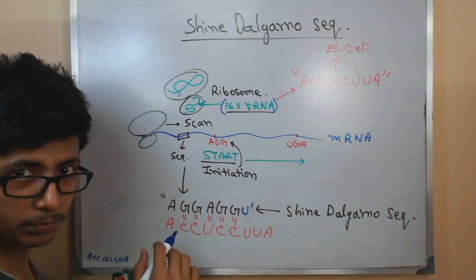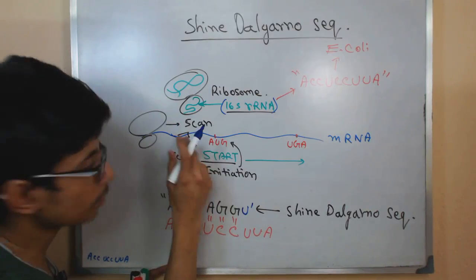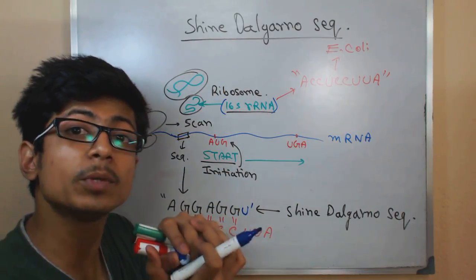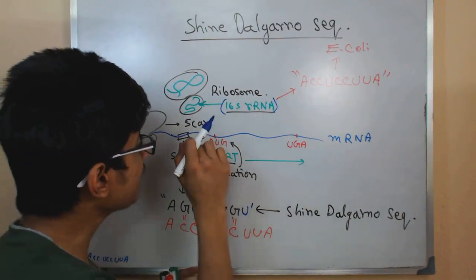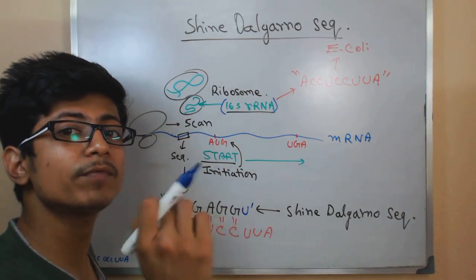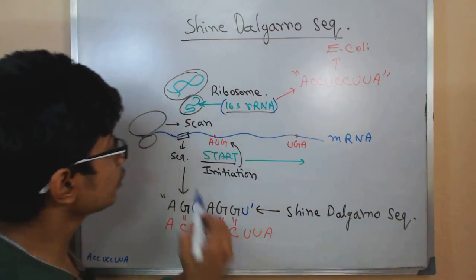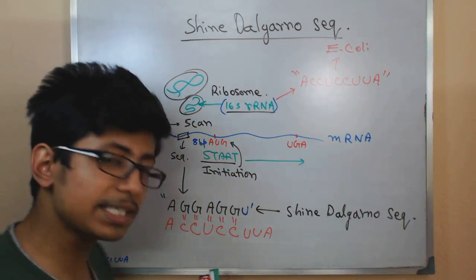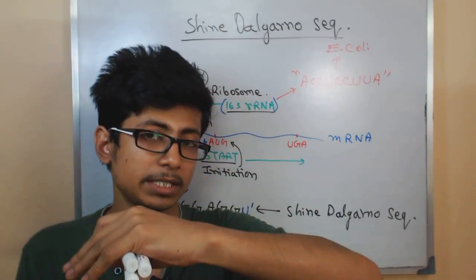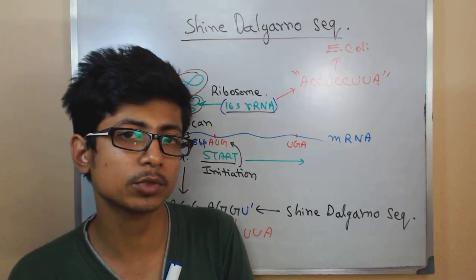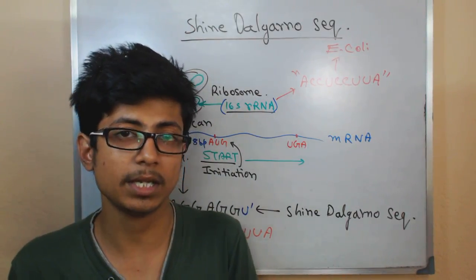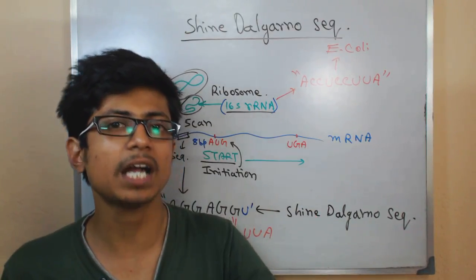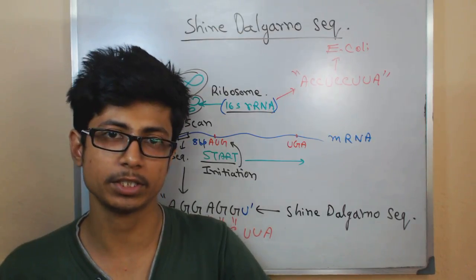Now this ribosome once finds this complementary sequence, it will bind itself there and it will recognize that yes, this is the time for starting the translation, though it is 8 base pair before the start codon. So once it finds the Shine-Dalgarno sequence, it provides a signal to the ribosome itself that yes, now I get the signal, that means after 8 base pair, now we have the start or initiation point of translation.